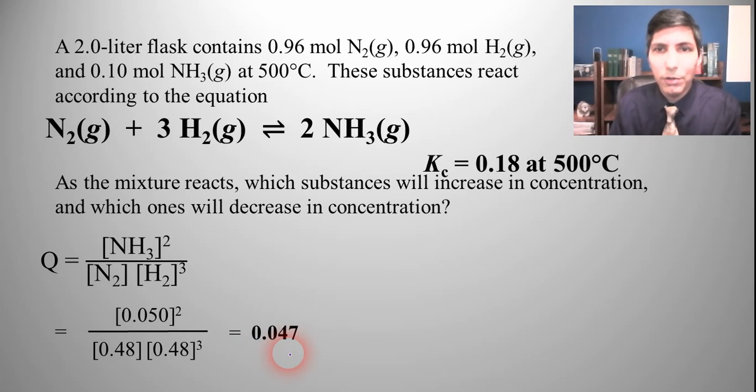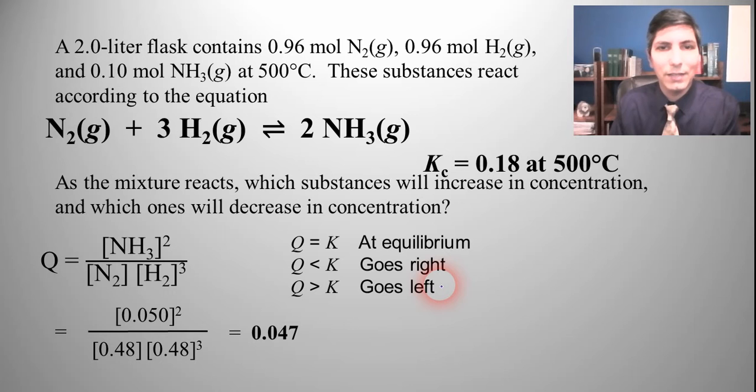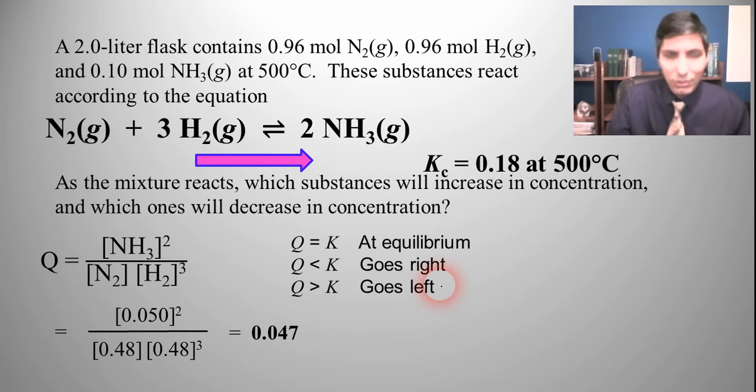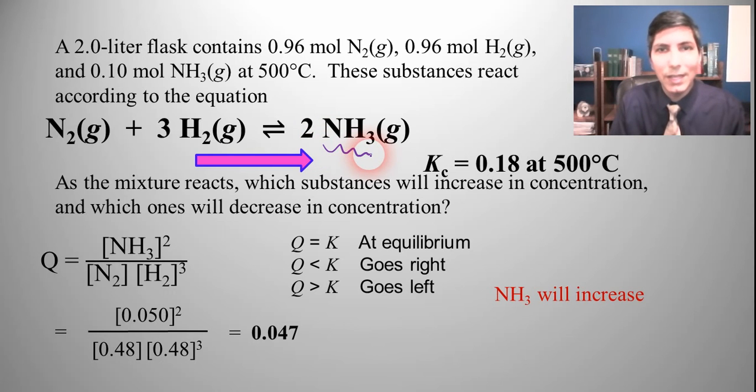So is Q greater than K or is Q less than K? Q is less than K, isn't it? 0.047 is quite a bit smaller than 0.18. So that means it's going to go to the right. So we're going to be making more products. If the reaction is shifted to the right, that means we're going to make more ammonia, so ammonia is going to increase, and that increase happens at the expense of nitrogen and hydrogen, so those reactants are going to decrease.